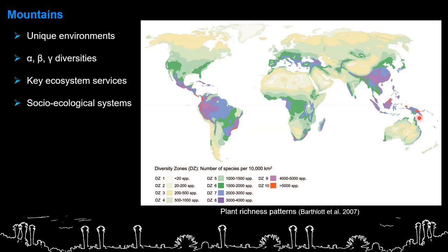In addition, we also see important ecosystem services. A mountain contains both forests, drylands, deserts, and grassland communities, so it's very diverse. Depending on the physiognomy of those communities, you are going to have different ecosystem services. Mountains are most known for water supply and regulation, but they're also important for carbon storage or spiritual and identity services. Overall, we could say that mountains are very important socio-ecological systems.